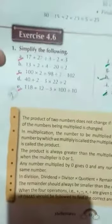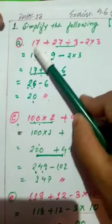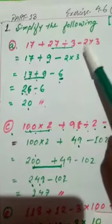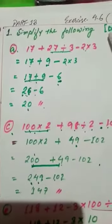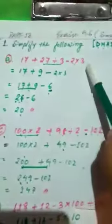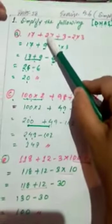You can see the book here. We will start with question number 1. Question (a) is given: 17 plus 27 divided by 3 minus 2 into 3. As we have to follow DMAS, we have to follow this rule to solve this numerical expression. So we have to do the division work first.